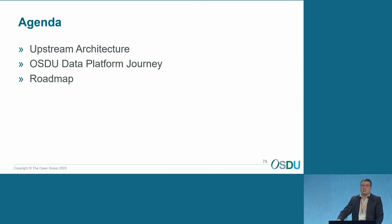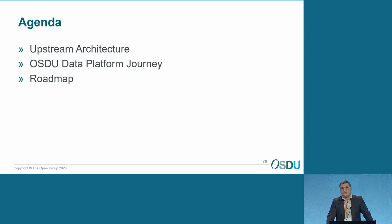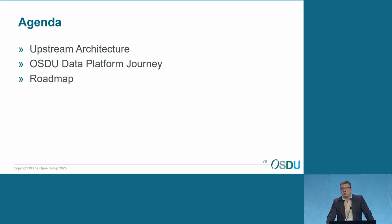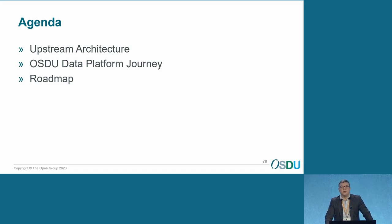The first topic will be about our upstream data architecture. We have quite an unusual architecture, so it's important to present it so you can understand some of the decisions we've made with OSDU. After that, I will present the journey itself — some objectives and the architecture we implemented. The last topic will be the roadmap, positioning things in time.